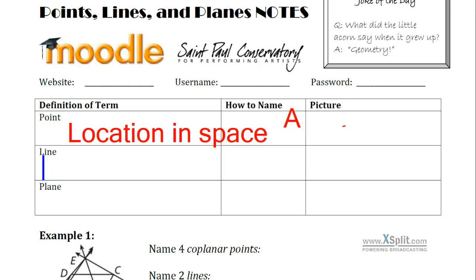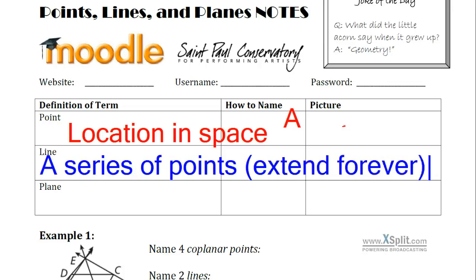A line is going to be a series of points that extend forever. They extend forever. And that's really critical. A line extends forever. Note that something called a line segment does not. The segment actually stops. How to name that, you're going to use two capital letters and I'll draw a picture for you in a moment after I get rid of some of this text.